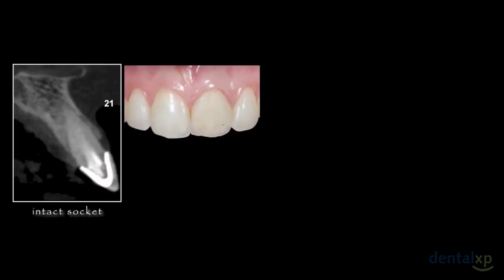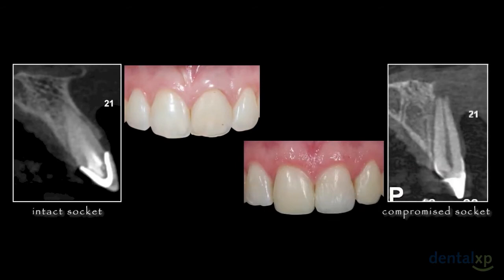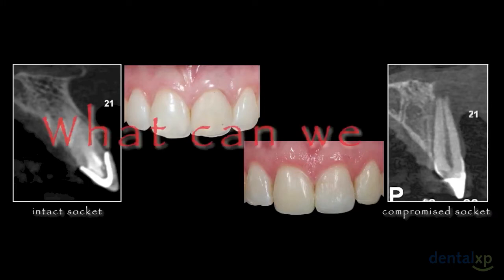We can face two possibilities: an intact socket when all walls around the tooth are present, or a compromised socket where some wall is missing — normally the buccal wall is lost, like in this case. In both situations we can foresee a result, but what can we do, especially in compromised sockets? This is our main subject: how we manage this kind of problem.